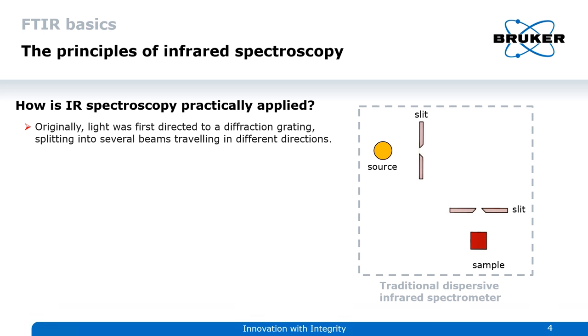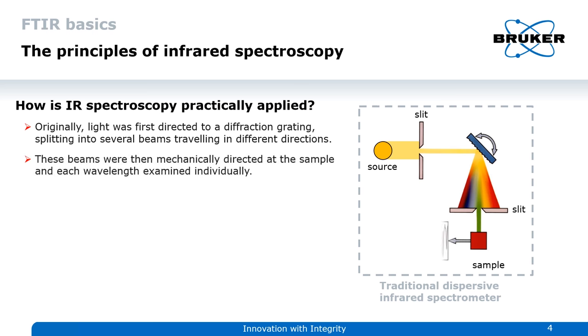This was done by directing light onto a diffraction grating that splits the light into several single beams. Afterwards, these beams were directed at the sample and each wavelength individually examined.